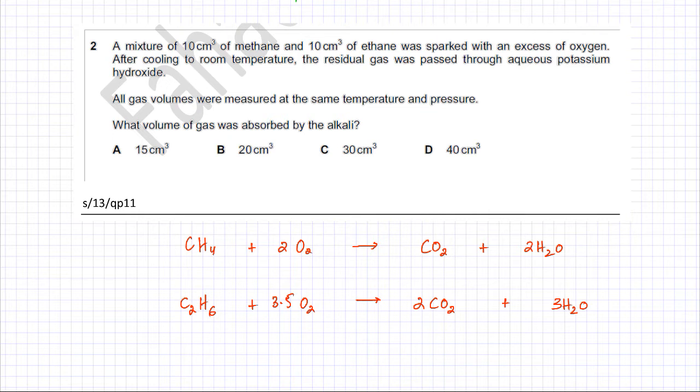The question states that after cooling to room temperature, the residual gas was passed through aqueous potassium hydroxide. Remember, potassium hydroxide is an alkali, and alkalis react with acidic substances. The only gas present in the products is carbon dioxide, which is an acidic gas.